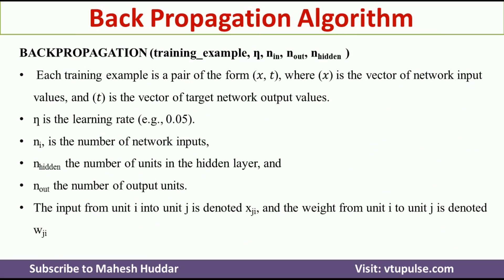The backpropagation algorithm takes five inputs. The first input is training examples. Each training example is a pair of the form (x, t), where x is a vector of network input values and t is the vector of target network output values. n is the learning rate — it is usually set to a small number, for example 0.05. It should be set as small as possible, but if you want to converge to the output faster, you need to set a higher number.